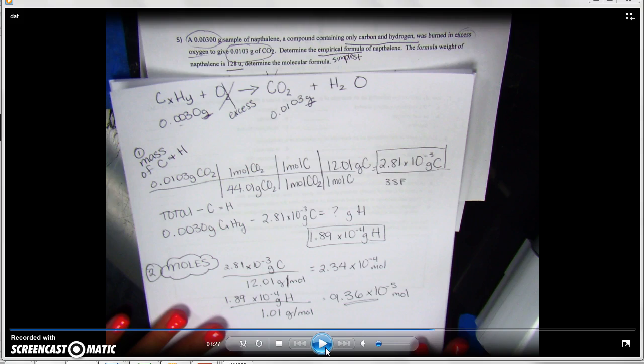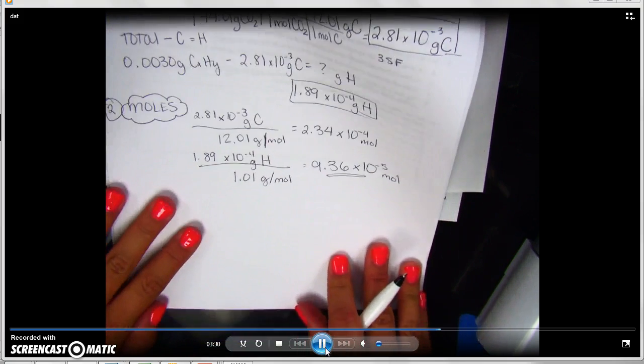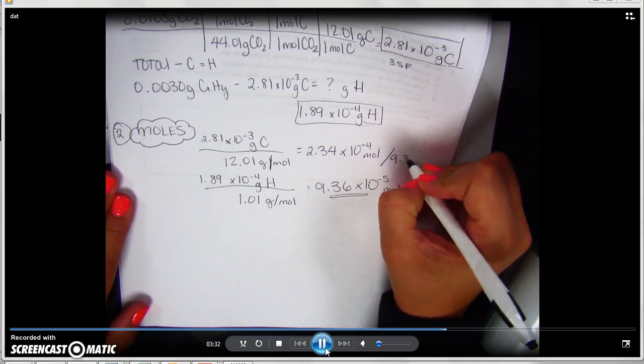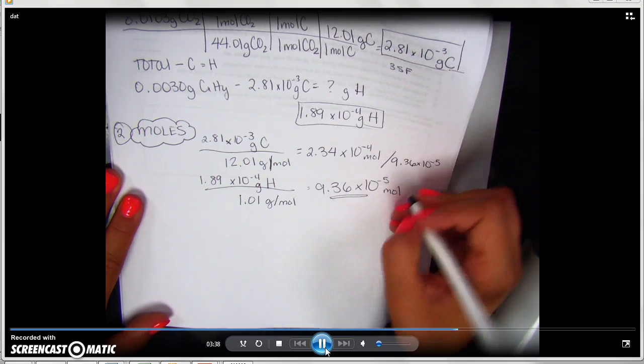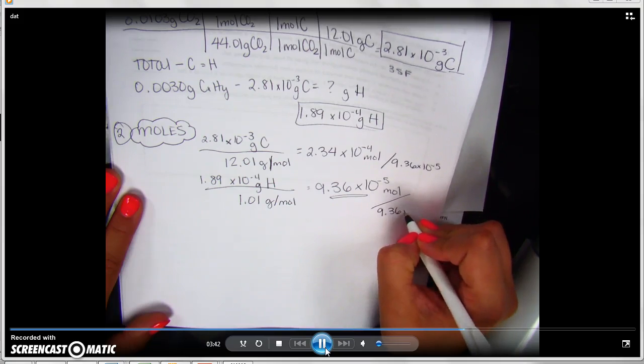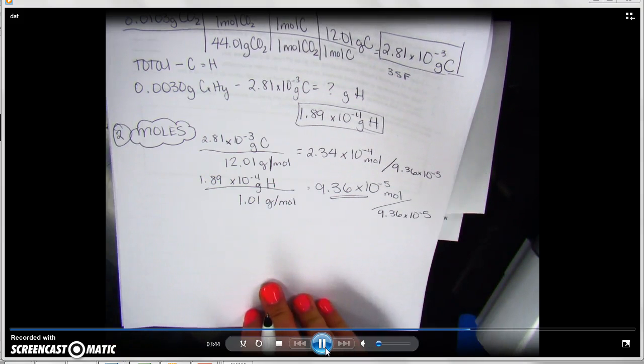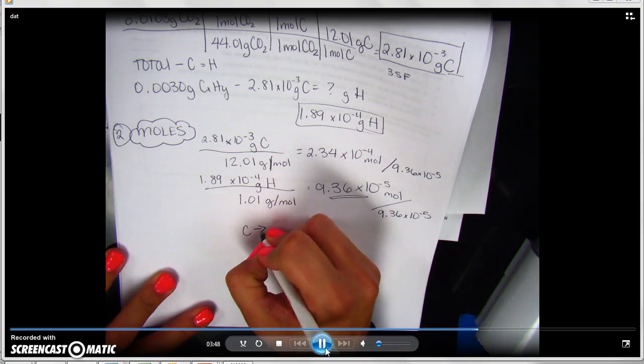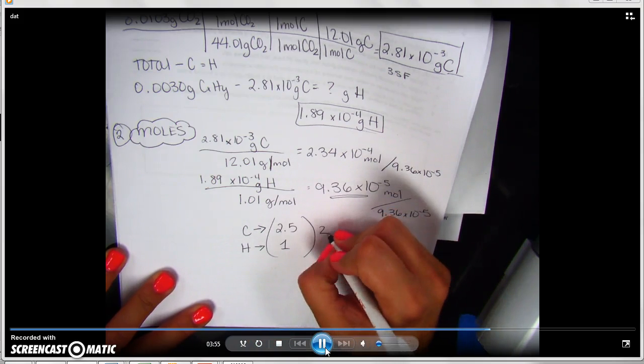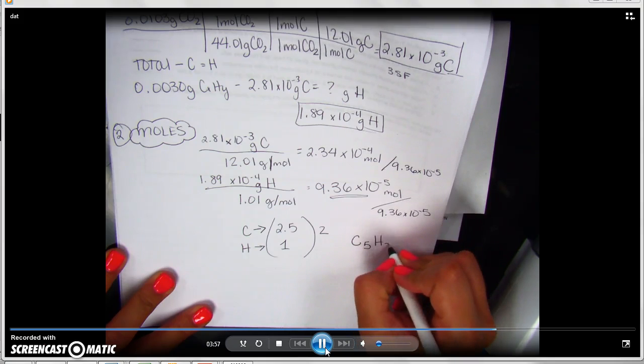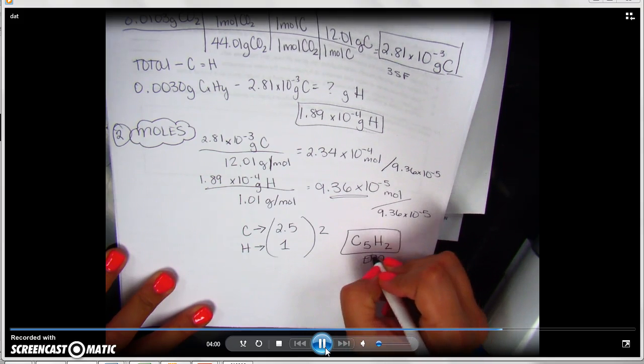We're going to go ahead and look for our smallest number out of the 2, which is the 9.36 times 10 to the negative 5, so our hydrogen. We're going to divide each one by that to find our ratio. This is how we're starting to get our empirical formula with this step right here. So dividing each one by 9.36 times 10 to the negative 5th, hydrogen is going to be 1. But when you plug in the other, you're going to get carbon to be 2.5. Like I said, hydrogen 1. So we know we need to double it in order to get rid of the 2.5. So our empirical formula is going to be C5H2.